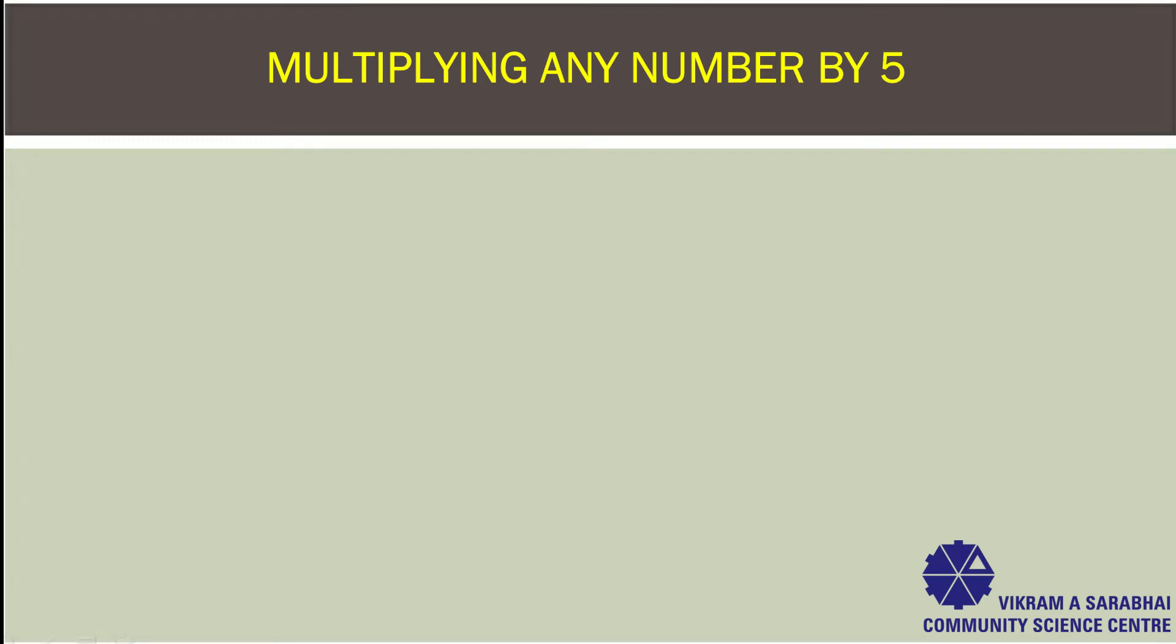Multiplying any number by 5. For example, what you will get when you multiply 2886 with 5?